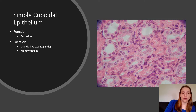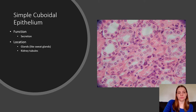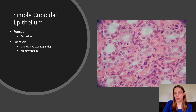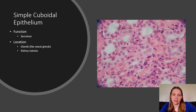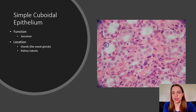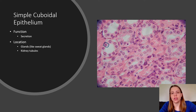The next slide is simple cuboidal epithelium. Its function is secretion, so you'll find it in places like sweat glands and kidney tubules. I like sweat glands — I think it's the easiest thing to remember. Here we can see that cube-type shape. You're seeing these little cheerio-type circles, and each cheerio is made up of a ring of individual cuboidal cells.